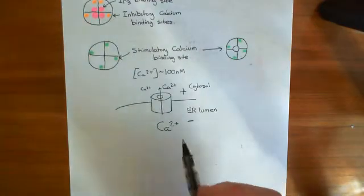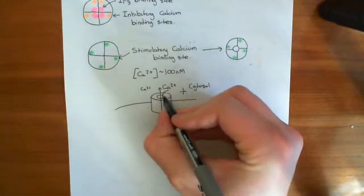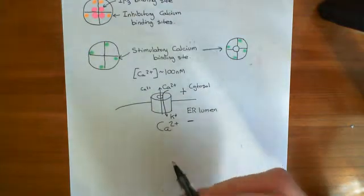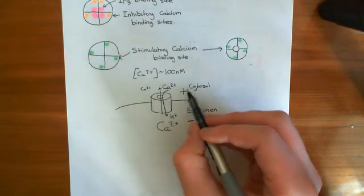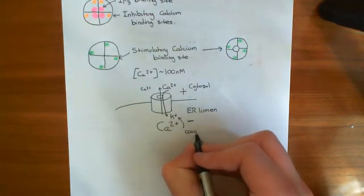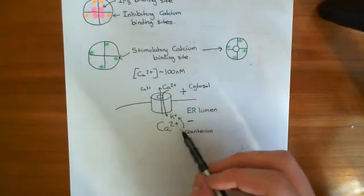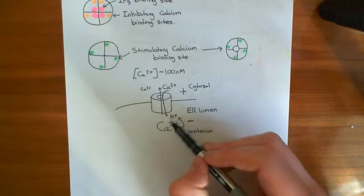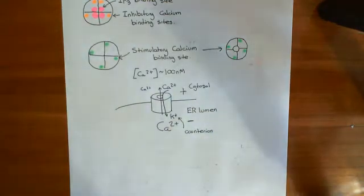So instead, the IP3 receptor also allows potassium ions to move through it. As calcium moves out, potassium in the cytoplasm comes into the ER lumen to balance the movement of charge — acting as a counter ion. The potassium is driven in by the electrical gradient that starts to build up, and by doing so it neutralises that electrical gradient, allowing calcium efflux to continue.